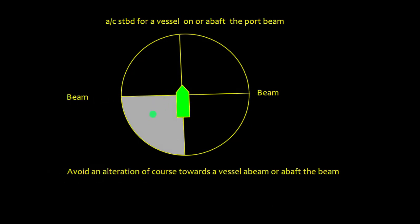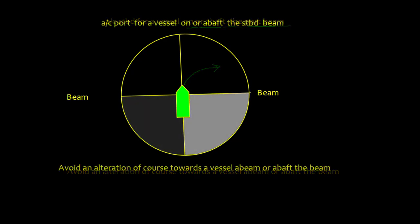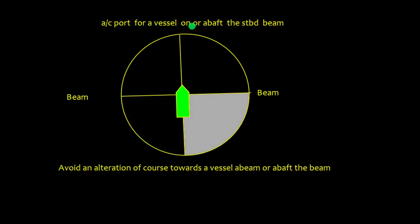If there is a target on or above the port beam, you again need to alter course to starboard because the rule says: avoid an alteration of course towards a vessel abeam or above the beam. If there is a target on or above the starboard beam, you cannot alter to starboard — you will alter to port. So in that scenario, alter course to port.